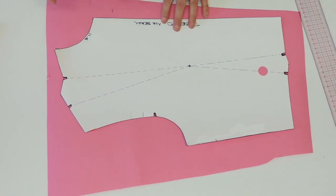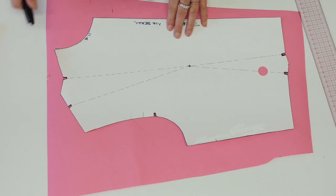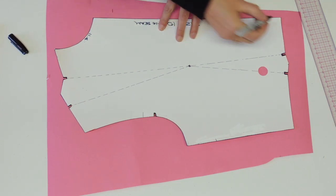For the front, we will start the same way. I'm going to trace all around my original block.